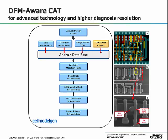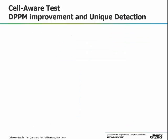With CellAware diagnosis, one can efficiently root-cause a failure to the failing polygon, as shown. Using CellAware diagnosis, a short between polysilicon and a diffusion contact was identified.